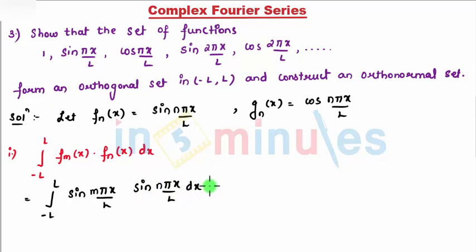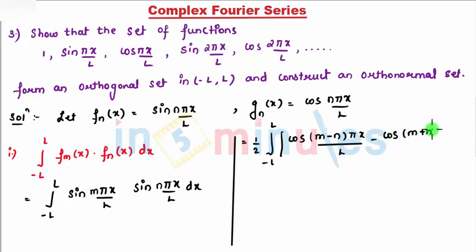So now after solving this, again sin sin, you need to write 1/2, integration minus L to L, this becomes cos of - I write first a minus b, so that will be nothing but (m-n)πx/L, and then minus cos of a plus b. So I write (m+n)πx/L, and dx. So let's integrate this.